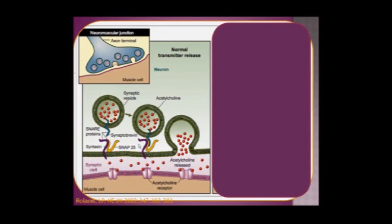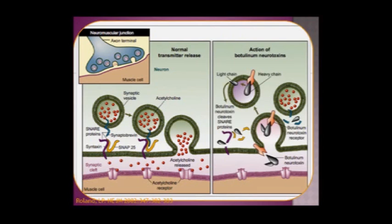This is normal transmitter release. When we have a botulism neurotoxin in the vicinity, the neurotoxin, which is a protein, can bind very specifically onto the membrane and get into the synapse, into the presynaptic terminal end. It comes in and breaks apart these SNARE proteins, so the vesicles cannot dock and cannot release their acetylcholine. Therefore, the muscle cannot receive the signal to contract. That is why we end up with flaccid paralysis. The muscle cannot contract at all because it's not receiving the signal thanks to this neurotoxin. That's why people die—because they can't breathe.